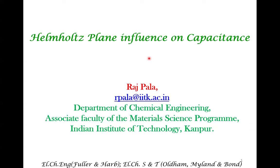In the earlier lectures, we looked at three models to understand electrochemical double-layer capacitors: the Helmholtz model, the Gouy-Chapman model, and the Stern model. Many aspects of experiments have been captured by these models, but still some parts have not been captured. To understand the incompatibility between experimental results and the Stern model, we have to look at additional details involving the Helmholtz plane and how it influences the capacitance.